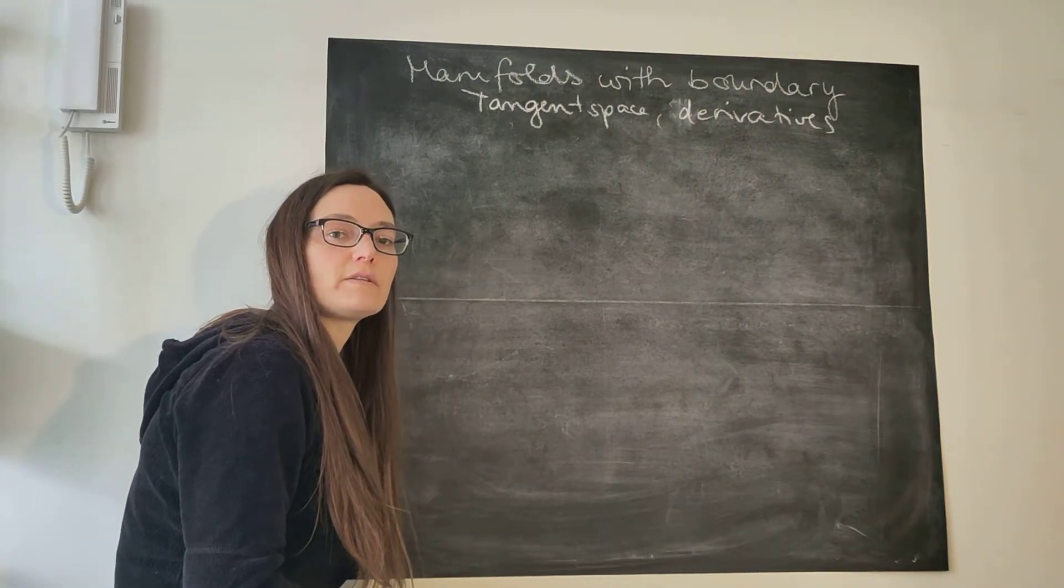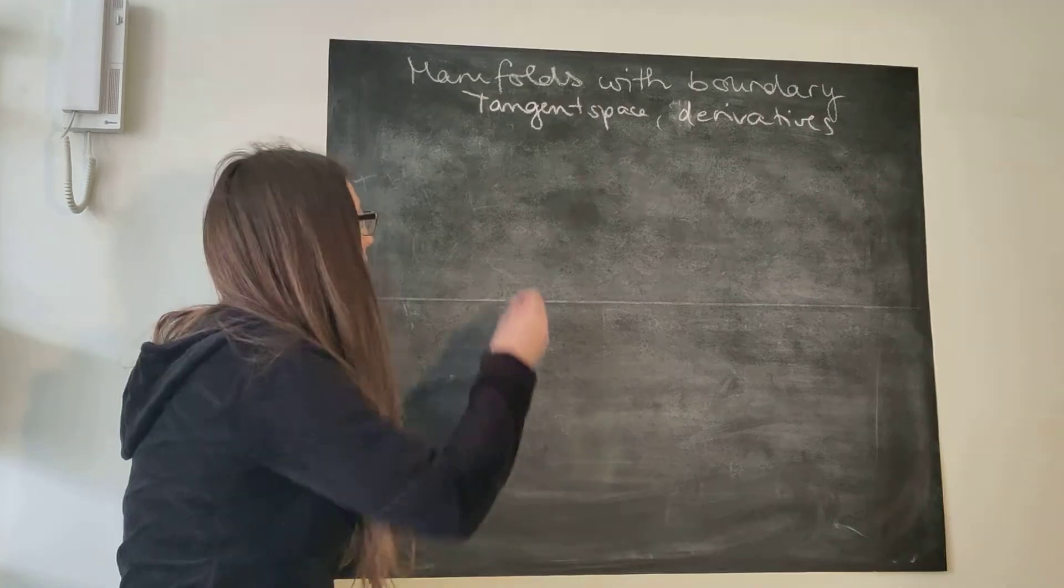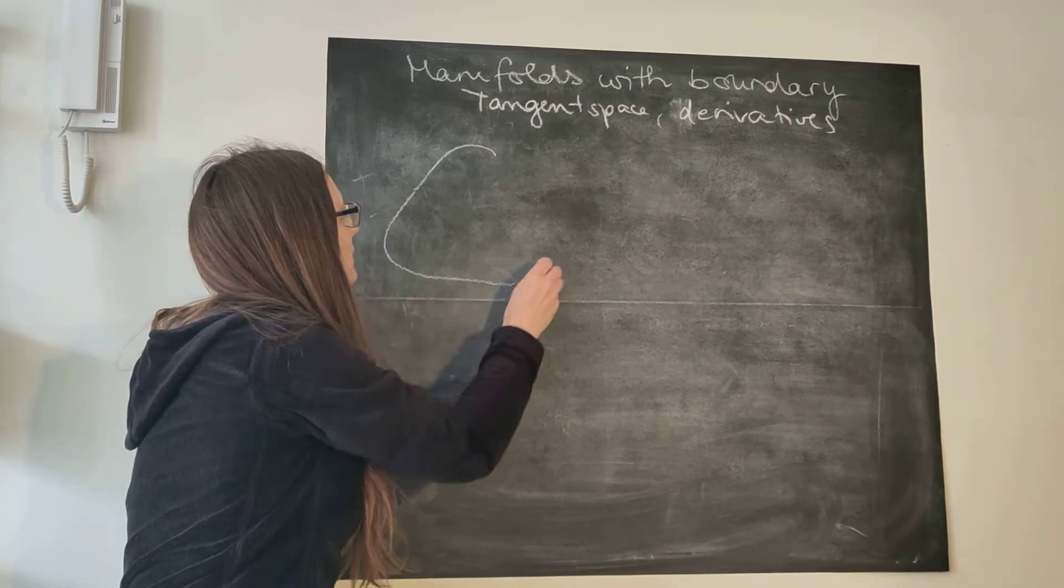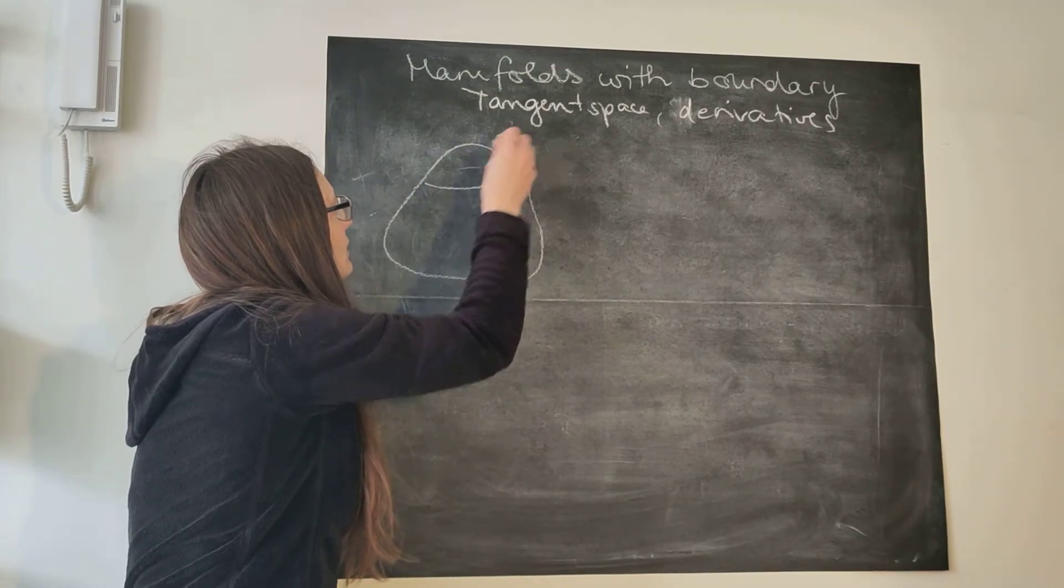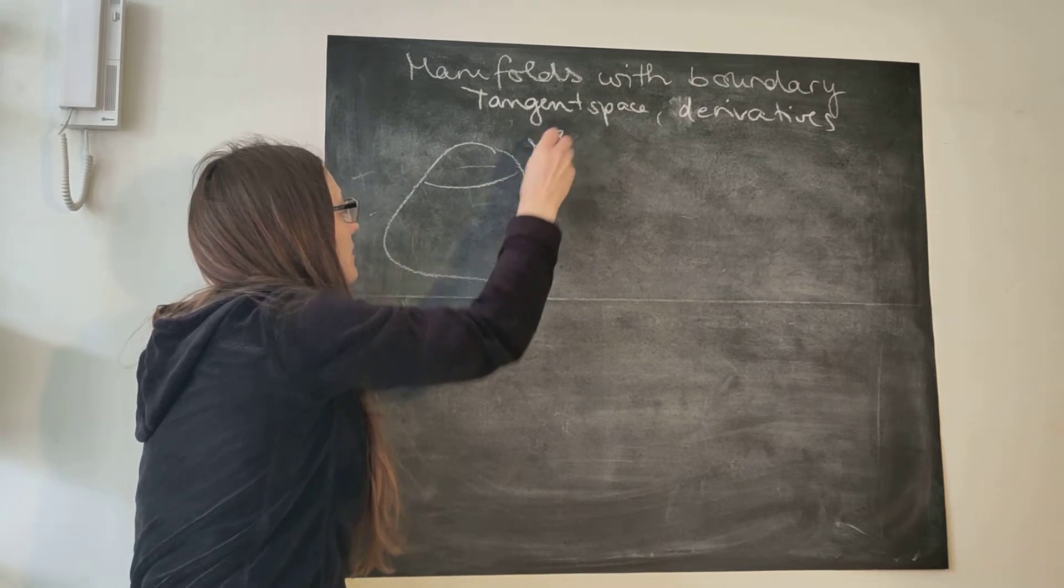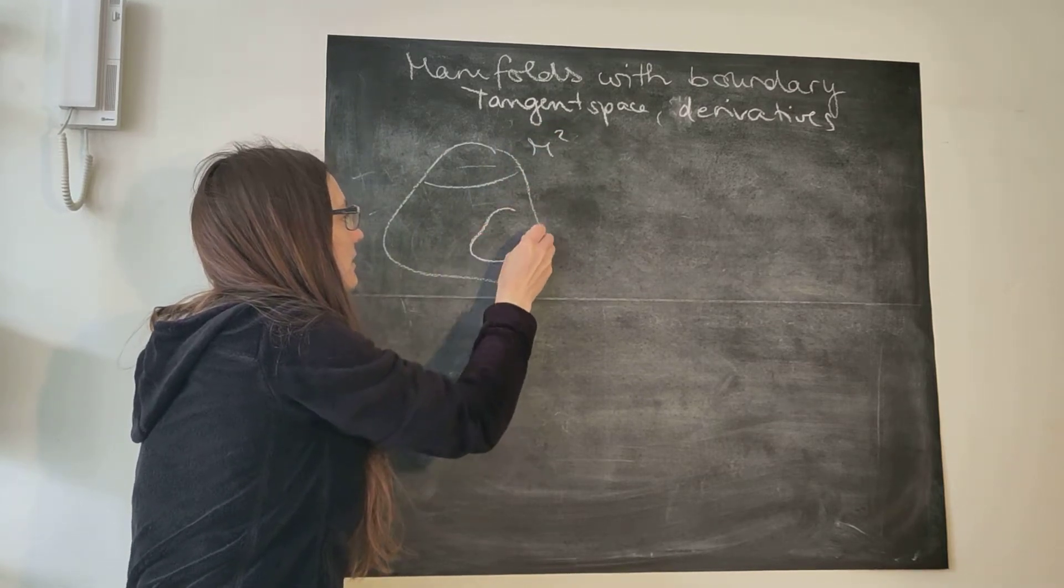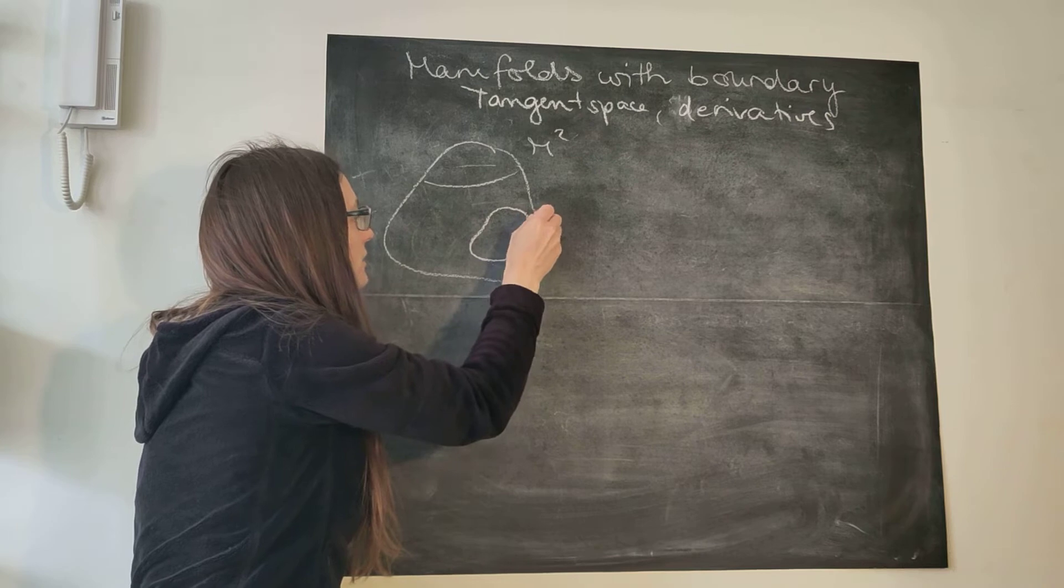Derivatives and tangent spaces of manifolds with boundaries. Let's take a two-dimensional manifold because that's easy to draw and think of with a boundary. So here's a wall.